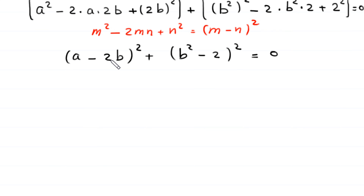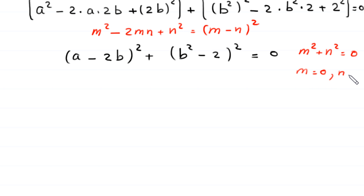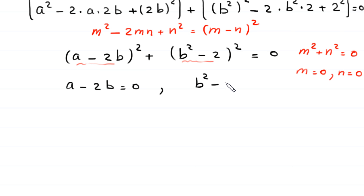We have a sum of two squares equal to 0. A sum of two squares can only equal 0 if each term equals 0. So a minus 2b equals 0 and b squared minus 2 equals 0. From b squared minus 2 equals 0, we get b squared equals 2, and taking the square root of both sides gives b equals square root of 2 or b equals negative square root of 2.